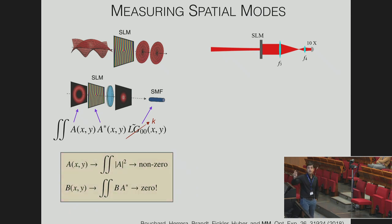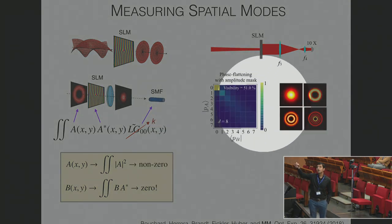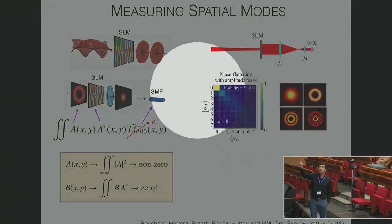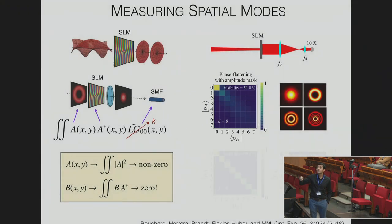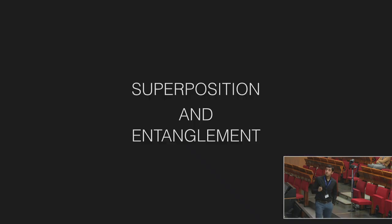This is without using our technique. When you try to measure radial modes, which are notoriously hard to projectively measure, you get very bad visibilities. This is mode in, this is mode out readout. With our technique, we were able to increase this visibility almost to unity. This was very useful, and we've recently applied this in entanglement experiments and had great success.